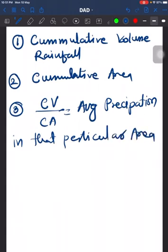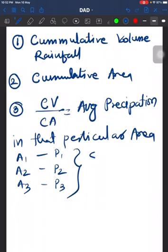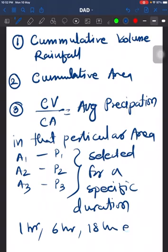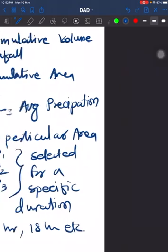We have areas A1, A2, A3 and precipitation P1, P2, P3. We have selected these for a specific duration like one hour, six hours, 18 hours, etc.